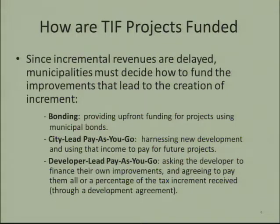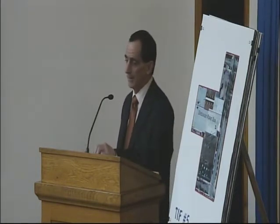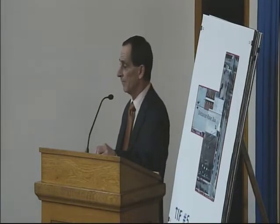How do we fund these TIF projects? We can bond for them, like we did at South Pier, where the city borrowed roughly $16 million for the infrastructure. It could be a city-lead pay-as-you-go, where there are grant monies the city can obtain and give the developer the benefit. But we most commonly use developer-lead pay-as-you-go, where a developer comes in and based on the increment they generate, we pay them back over a period of time. The advantage is the city doesn't have to borrow money — we pay as they develop the property. If the increment falls short of projections, the developer only gets what was actually put in.